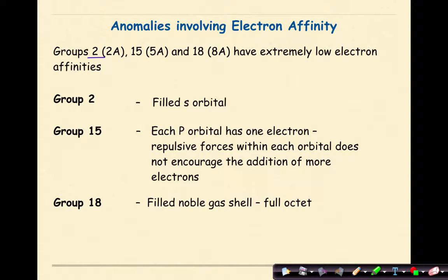Groups 2, 15, and 18 have extremely low electron affinities. Why? Elements in group 2 have filled s orbitals, therefore they're not really looking to gain electrons as that s orbital is filled.